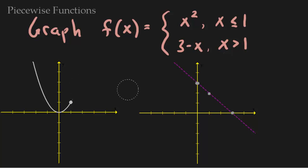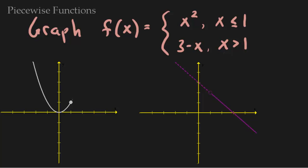Let's move on to 3 minus x. I want it to apply when x is greater than 1. I re-graphed it to get rid of extra points. Here's when x equals 1 — you can use this as a reference point. Even though I don't get to include 1, when x is 1 I would have expected 2, so I put an open dot. Then the graph looks like this line when x is greater than 1, so I darken in that side and keep going, then erase the pieces I don't want.